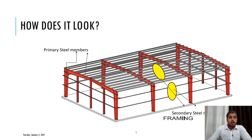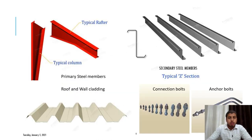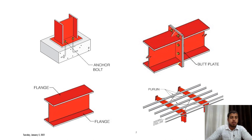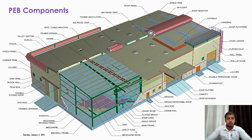How does a PEB look? It mainly contains two parts. The first is primary steel members and the second is secondary steel members. As we can see in this figure, we have both components illustrated. Primary members include columns and rafters, roof cover, while section connection boards and anchor boards come under secondary members. In this slide, we can see anchor bolts, butt plates, flanges, and purlins. I have added a detailed figure for getting more depth about PEB components, and each part with its name is labeled.